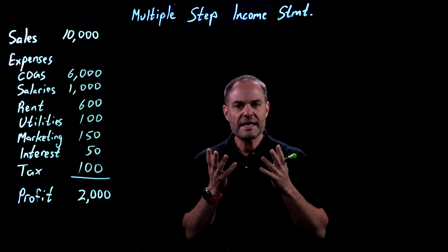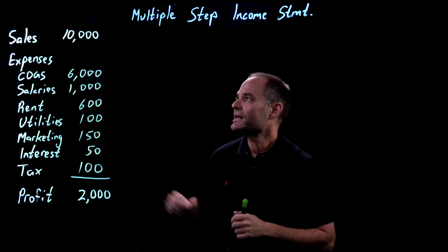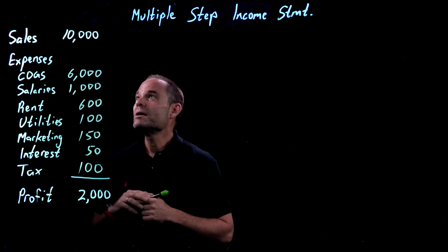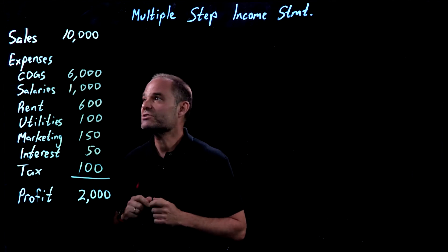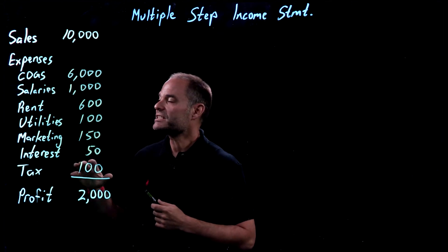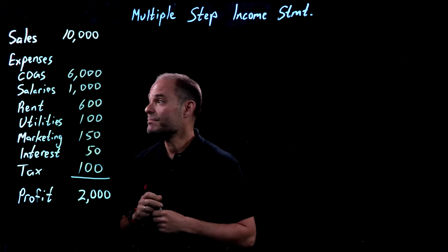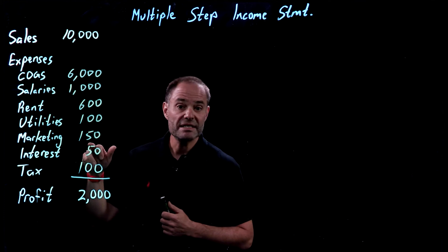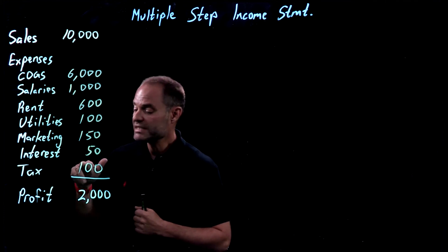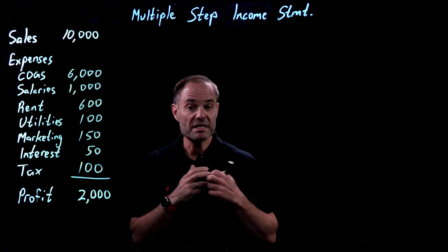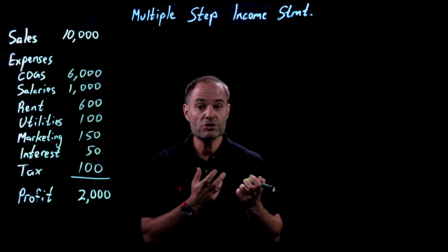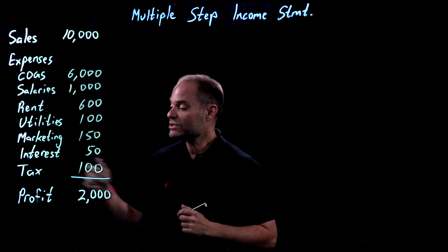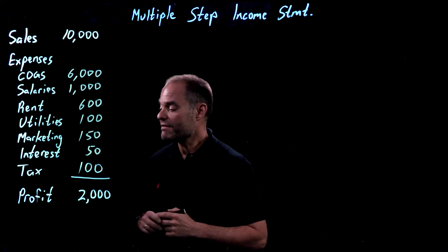Up until now, we've been looking at income statements that were fairly simplistic. Here's an example of one. We have a company with sales of $10,000, and then we've listed off all the expenses: cost of goods sold — so it's a merchandising company — salaries, rent, utilities, marketing expense. They borrowed some money, so they have some interest expense. We're assuming this is a corporation, so it has tax expense. Remember that a sole proprietorship or a partnership wouldn't pay any taxes directly; it would be paid by the owners. But this is a corporation, so it has tax expense. They have a profit of $2,000.